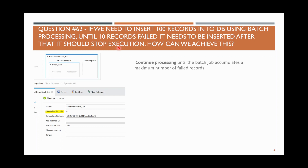Some records may fail in between. You want to stop only if more than 10 records fail — up to 10 failures is acceptable. If it continuously fails beyond that, you want to stop the flow. How do we do it?